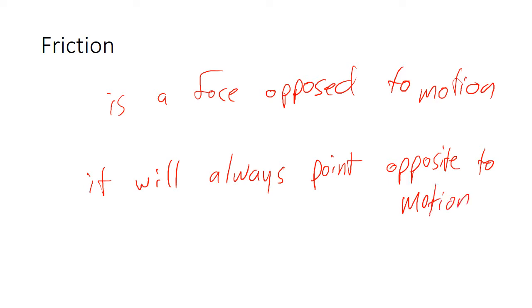This means that it will always point opposite to motion. Now it's a little tricky sometimes. For example, if you're running this way, you're pushing your feet this way, so the friction is going to be this way.